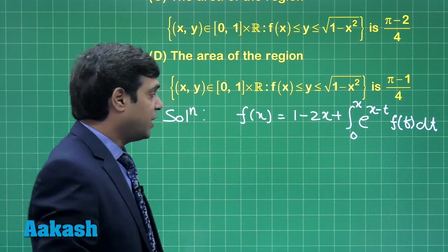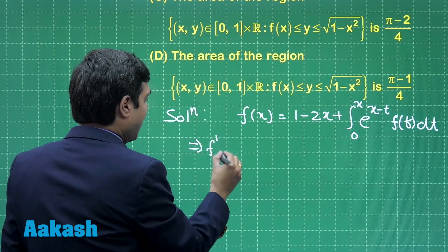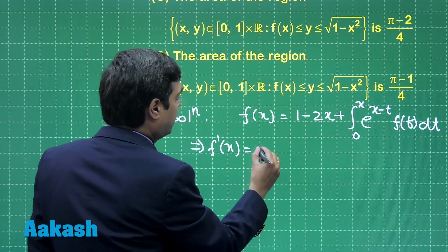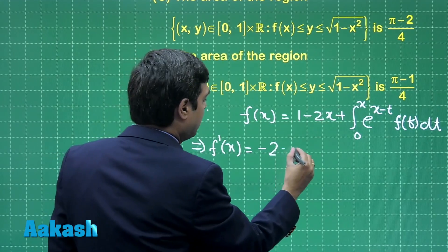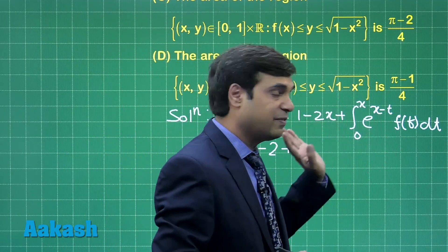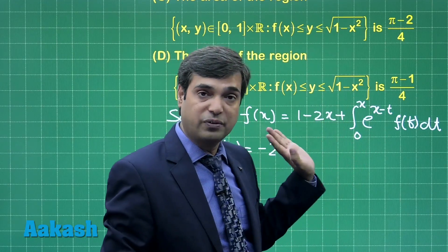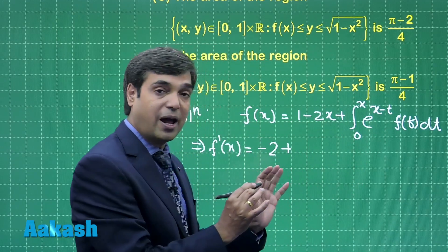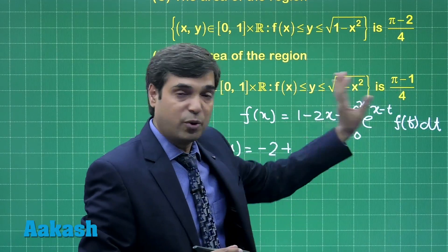We get f'(x) is equal to minus 2 plus... Here we can see x is the part of limit as well as function, but this e^x can be taken out of the integral sign. We will apply differentiation as the product function.